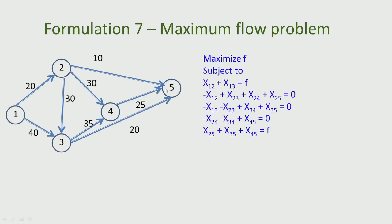If we look at the sink or destination, which is node 5, the fifth constraint states what enters the sink: x_25 plus x_45 plus x_35. The same flow that went out of 1 will have to reach 5. So the constraint for node 5 is: x_25 + x_35 + x_45 = F. Flow x_25 comes from node 2, x_35 from node 3, and x_45 from node 4.